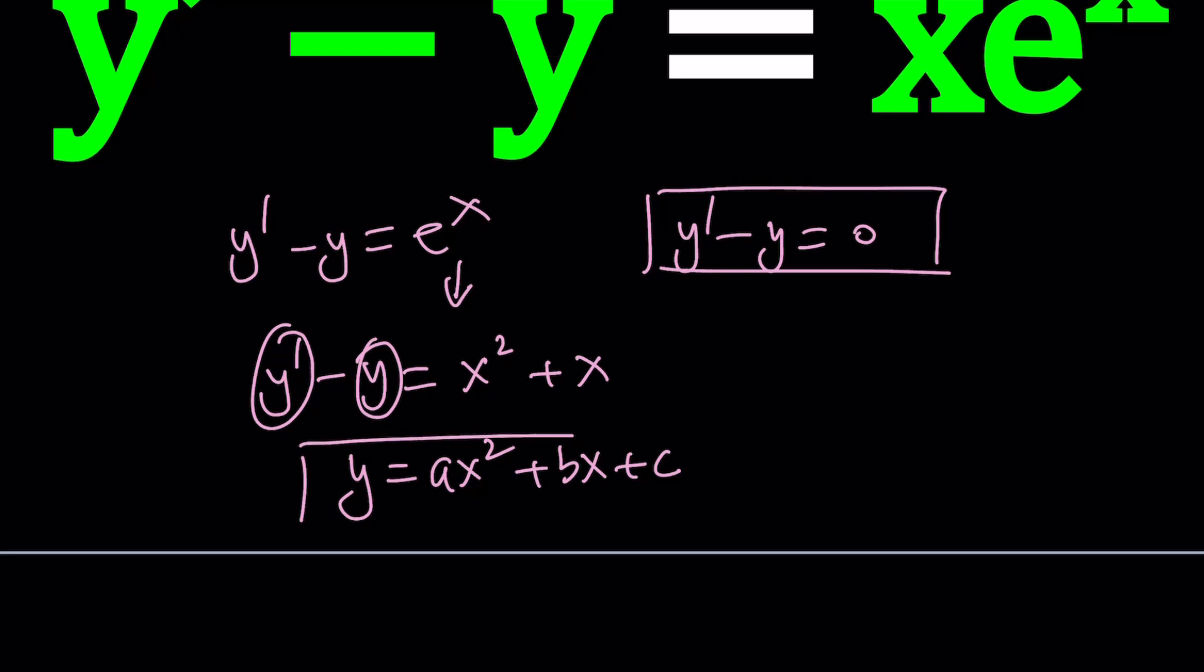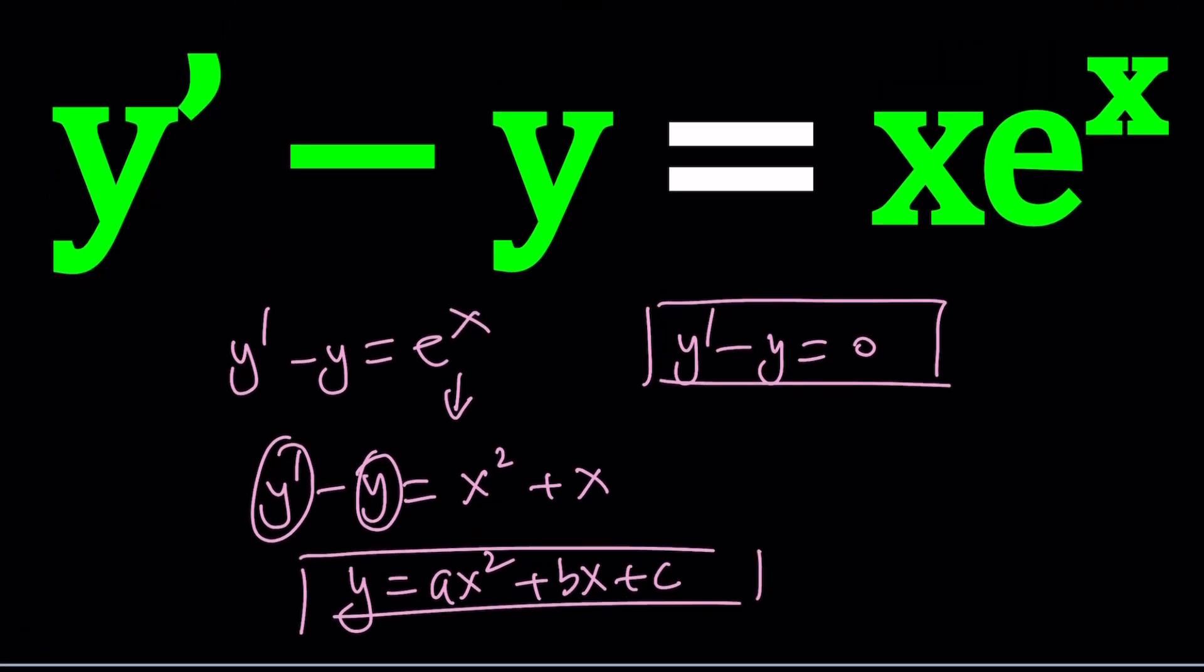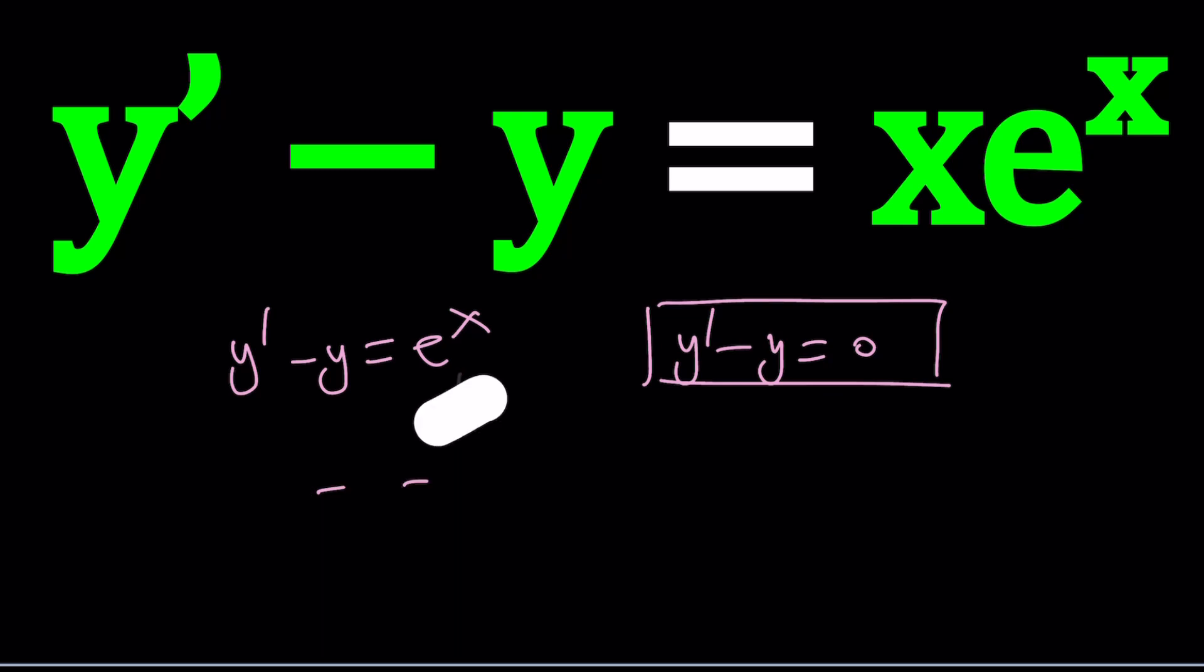That would work easily, but that's not the case, because we have a more complicated function, which is the product of x e to the x. And if you had something like tangent x or secant x on the right-hand side, this method would not work as easily. We're still going to look at the homogeneous case, but then the next step will be slightly different.